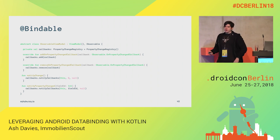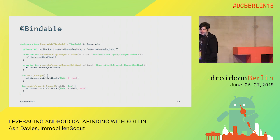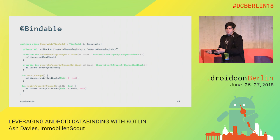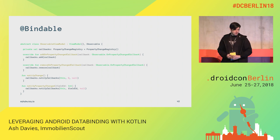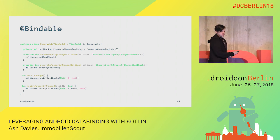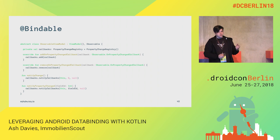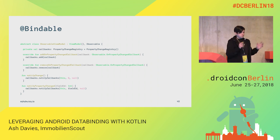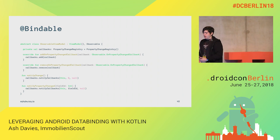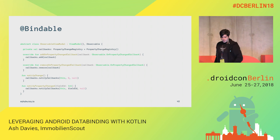Here's a simple observable view model implementation with two methods — addOnPropertyChangedCallback and removeOnPropertyChangedCallback — that allow data binding to listen to various properties. We've added two helper functions: notifyChange and notifyPropertyChanged. Using parameter 0 means all properties have changed and you need to rebind your entire dirty layout, or you can pass an individual field to let data binding know just one field has changed.